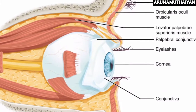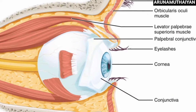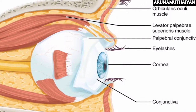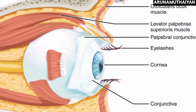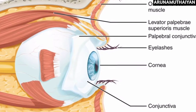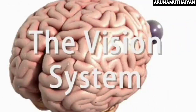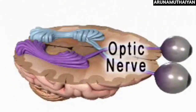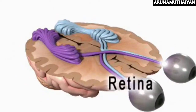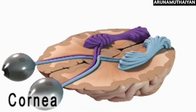We are going to talk about the physiology of vision. We have photoreceptors in our eyes. There are two types of photoreceptors: one is rod and the other is cone.